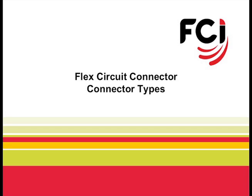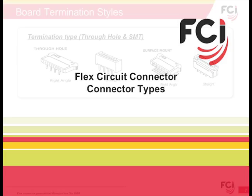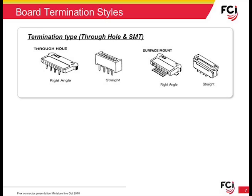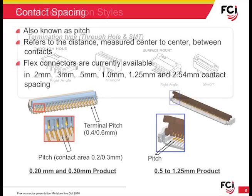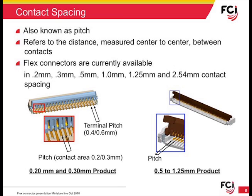Now we will examine the various types of connectors used to terminate flexible circuitry. Flex-circuit connectors are available in both through-hole and surface-mount board terminations, and in both right-angle and vertical, or straight, configurations. Flex-circuit connectors are available in multiple contact spacing options, ranging from 1.25 millimeters down to 0.20 millimeters. There are connectors with larger contact spacing, such as 2.54 millimeters, but these are typically two-piece connector solutions. Contact spacing, also referred to as pitch, is the distance between contacts in the same row measured center to center. The contact spacing chosen usually reflects the application's demand for printed circuit board space.